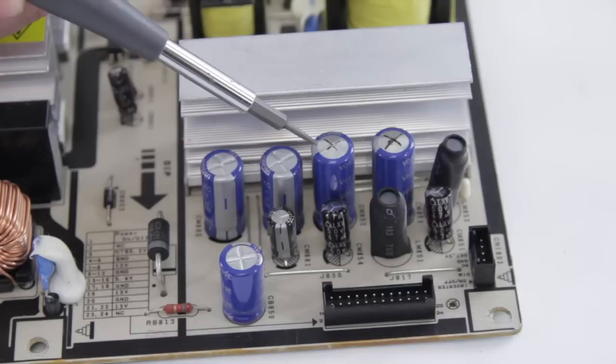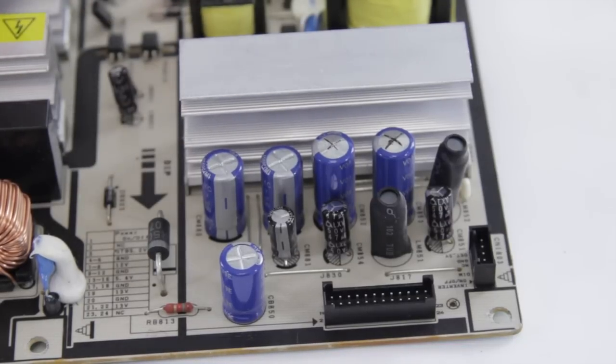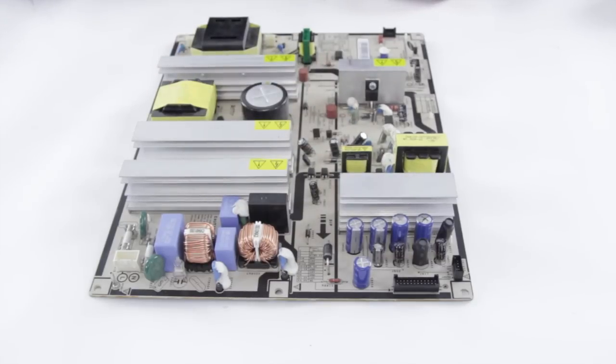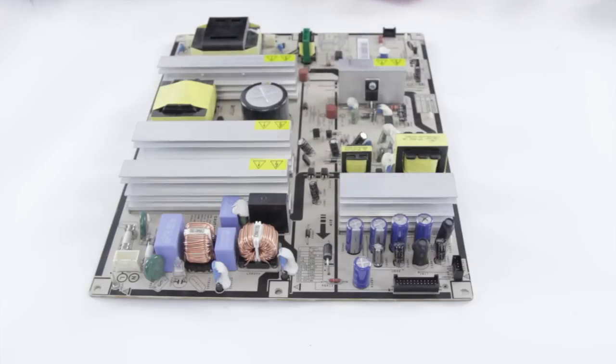And right next to them we have these caps right here. You can see that their tops are bulged up and they're also leaking out this kind of brown ooze. This means that they're defective. Every once in a while you will get caps that are defective but don't show signs like that, but almost every time you're going to see this puffiness and if it's really bad, fluid leaking out from them.